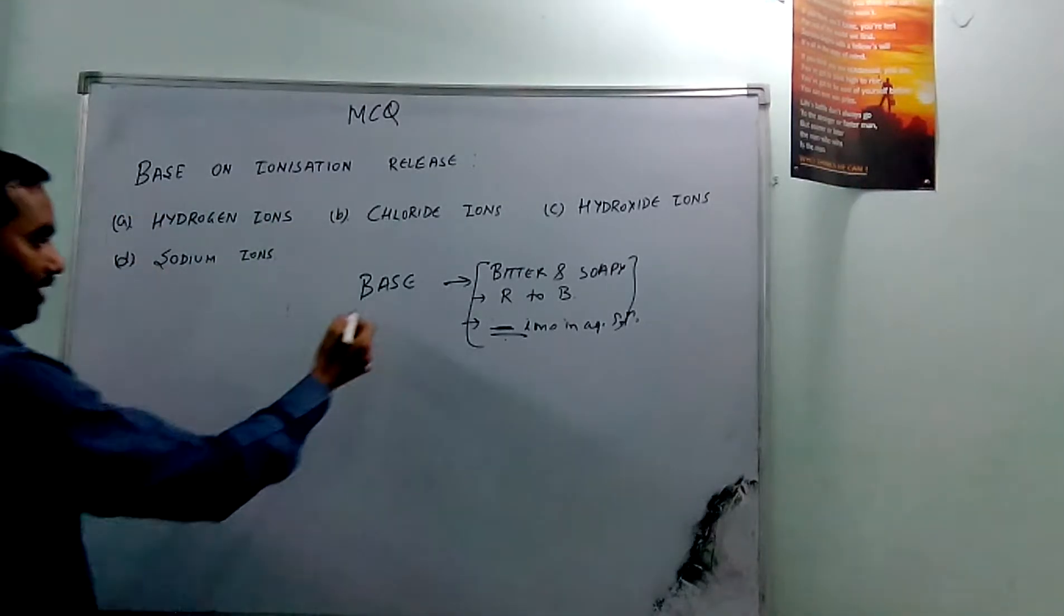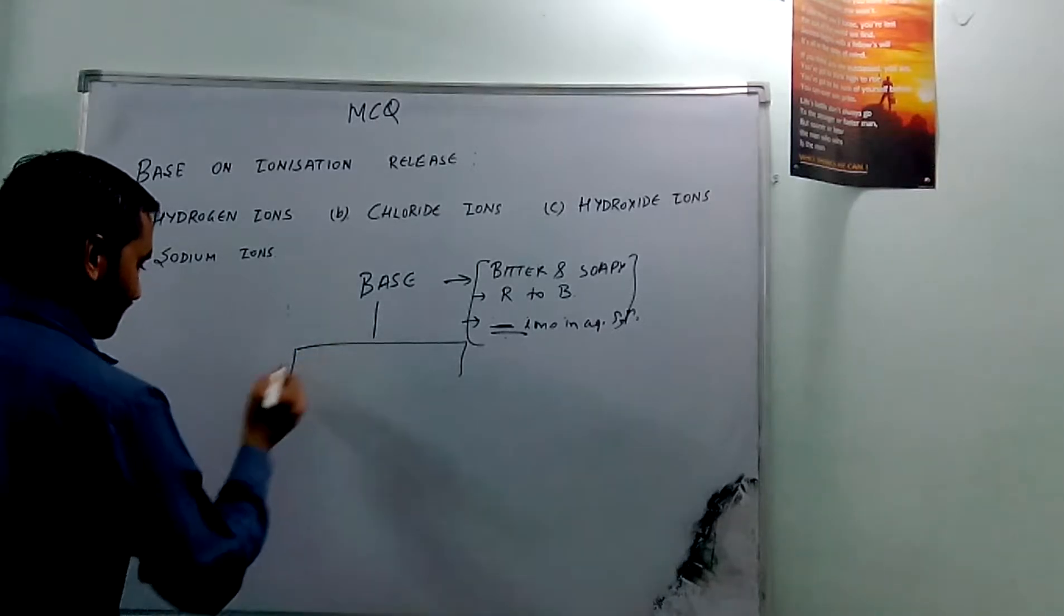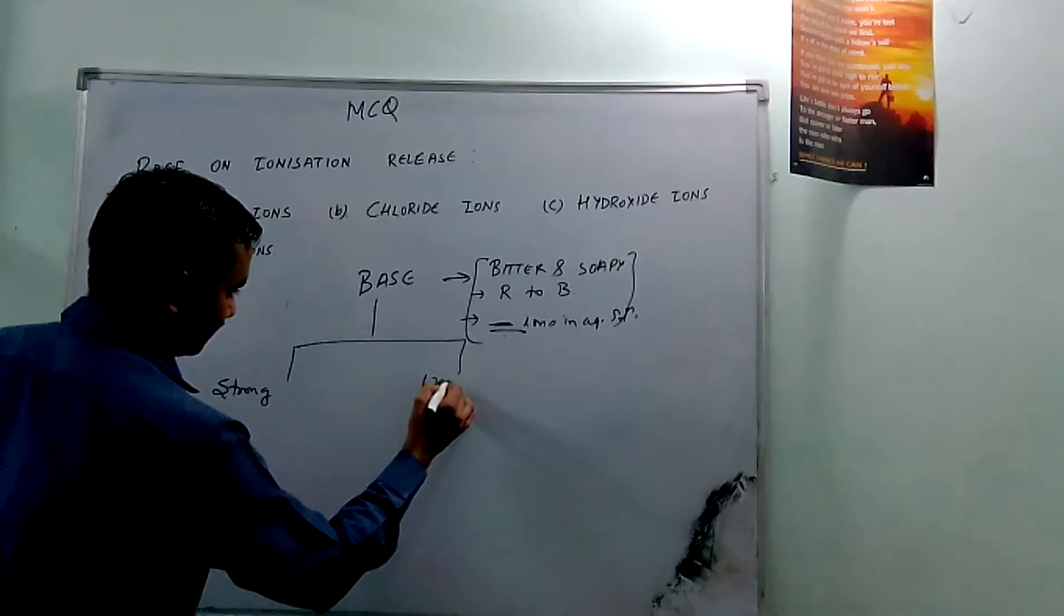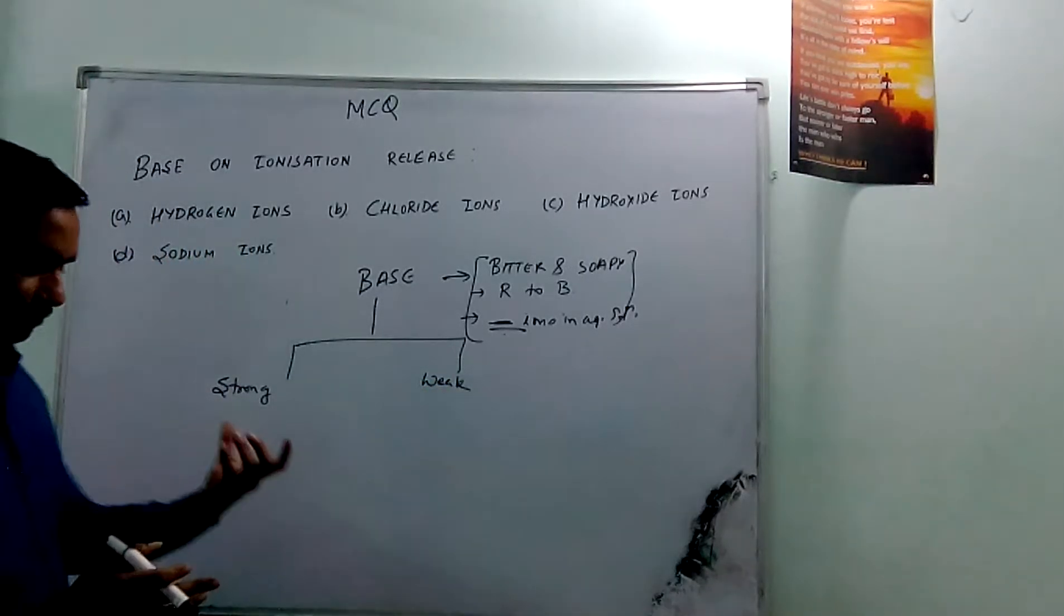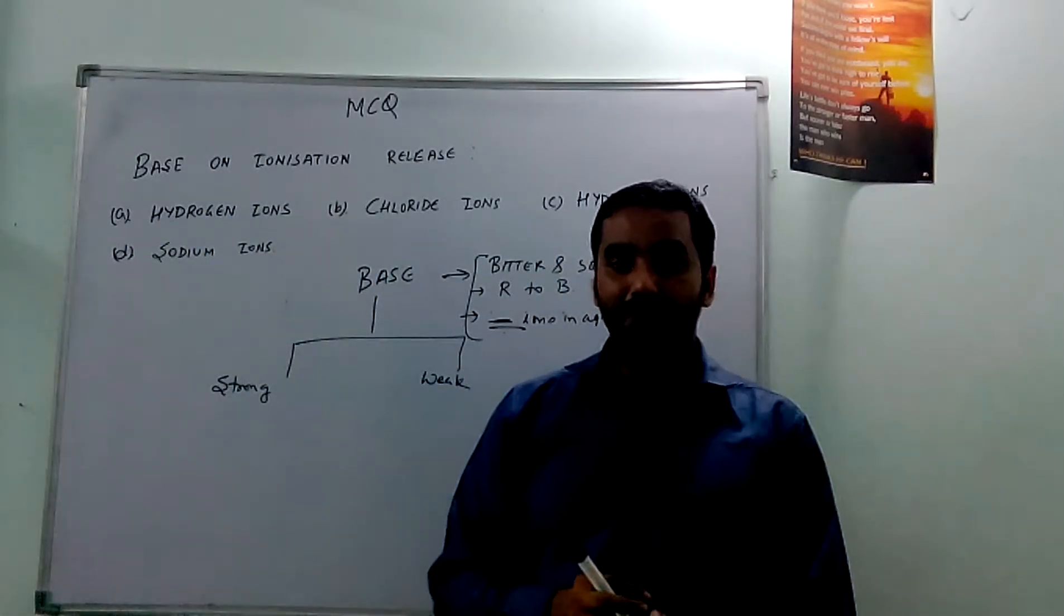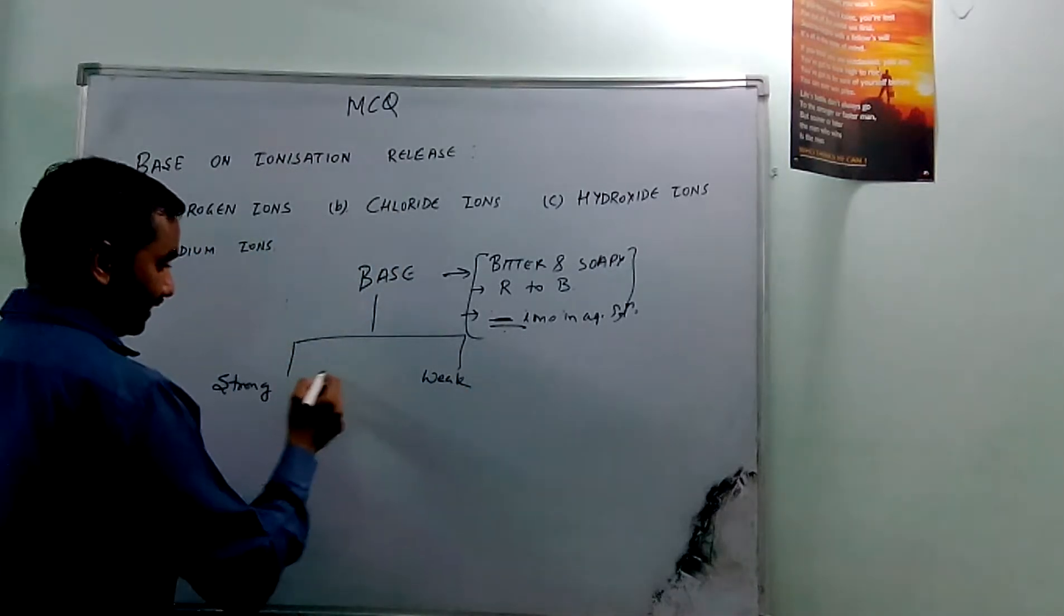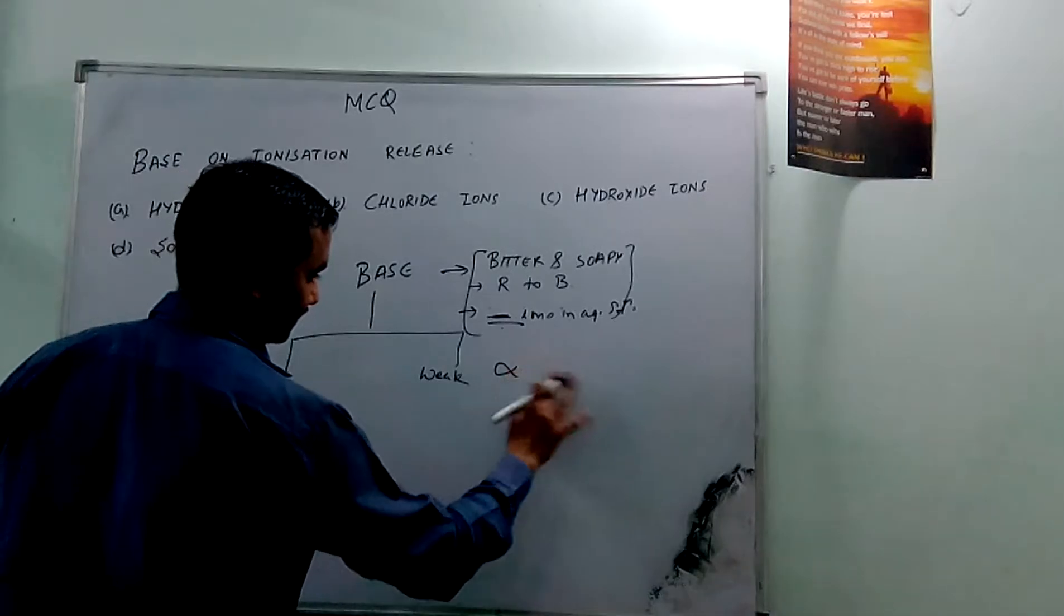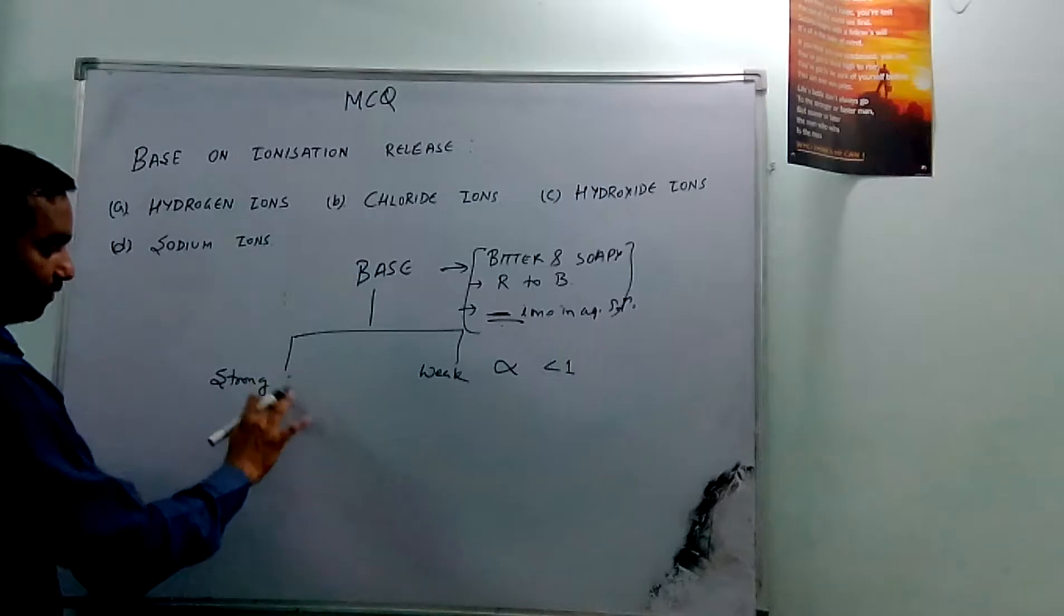How are the bases classified? Similarly in acid, it is classified into two parts: one is called strong base and another is called weak base. Strong bases are those which are completely ionized to convert into ions. Weak bases are not completely ionized. Their relative strength is less than one, and for strong bases their relative strength is somewhat equal to one.